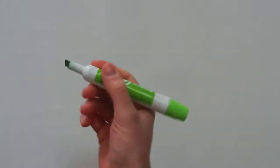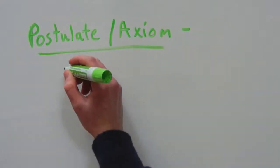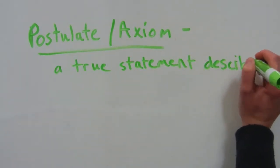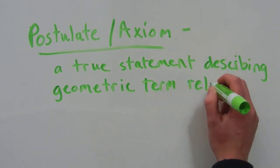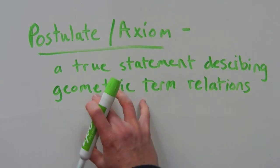In this video we are going to go over true statements relating to basic geometric definitions. So first we're going to define a postulate or an axiom. A postulate or an axiom is a true statement describing relations between the geometric terms.